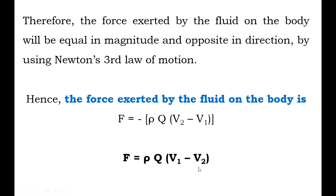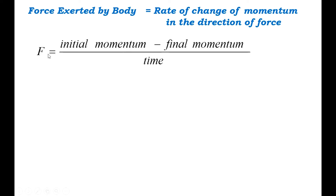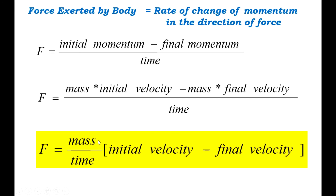Let us conclude the topic. For the impulse momentum principle, the force exerted by the body equals the rate of change of momentum in the direction of the force. So F equals initial momentum minus final momentum divided by time, where initial momentum is mass into initial velocity and final momentum is mass into final velocity. Finally, F equals mass per unit time into (initial velocity minus final velocity). Using this impulse momentum principle, we find the force exerted by a jet on a plate under different conditions. Thanks for listening carefully.